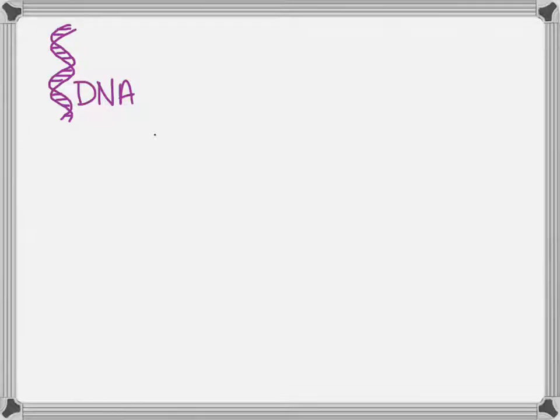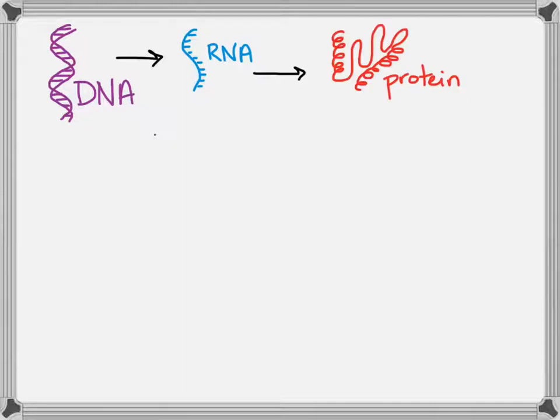You're going to be hearing a lot about the central dogma of genetics in this class, in this unit, and the next. And that is that DNA makes RNA, and that RNA is used to make protein.